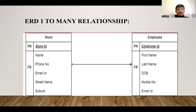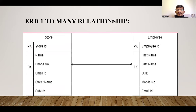Here we are going to discuss about one of the ERD diagrams — the one-to-many relationship between the store and employee. In the case of the store, store ID is the primary key, and other attributes include name, phone number, email ID, and store address — that is, street name and suburb. In the case of the employee, employee ID is the primary key, and other attributes are first name, last name, date of birth, mobile number, and image ID.